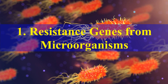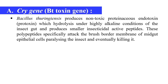First, insect resistance genes from microorganisms. One example is the cry genes, which are present in Bacillus thuringiensis, a bacterium. Bacillus thuringiensis produces a non-toxic protein endotoxin called protoxin. When insects feed on this non-toxic protoxin, inside the stomach of the insect it is changed into the active toxin due to the alkaline pH of the insect gut. Once converted into the active toxin, it attacks the brush border membrane of the midgut epithelial cells, ultimately paralyzing and killing the insect.